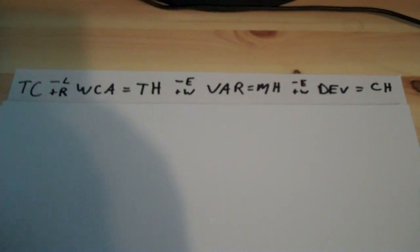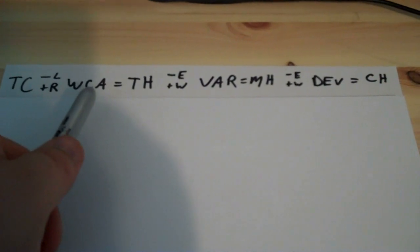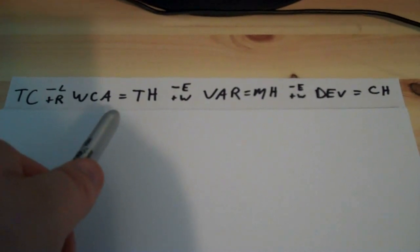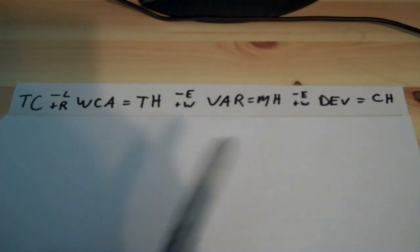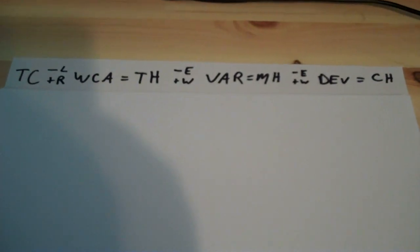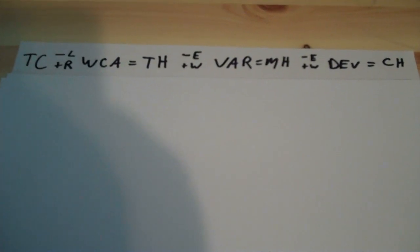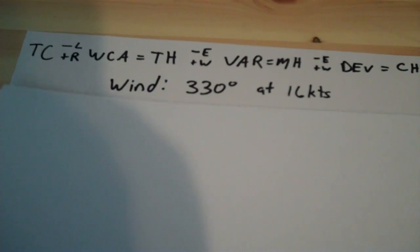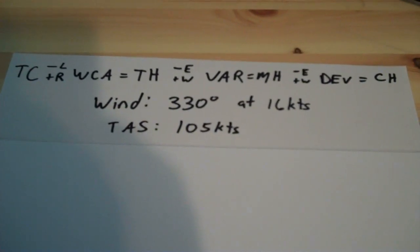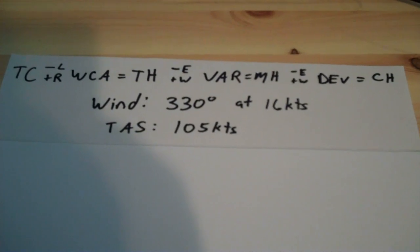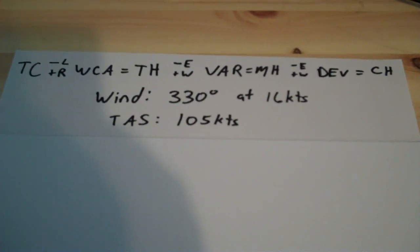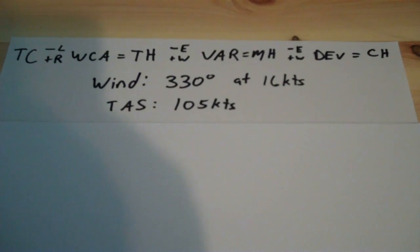So what is this variation? Jason defined wind correction angle in the previous video, so go back and review that if needed. Variation is the difference between magnetic north and true north, and it's printed on your chart — we'll get back to that in a moment. For the purposes of calculating our wind correction angle first, we'll say that our winds today are 330 degrees at 16 knots and our true airspeed is 105 knots. I'm going to pause so you can try to calculate this on your own using Jason's techniques. Go ahead and pause this video, try it yourself, then come back and we'll go through it together.